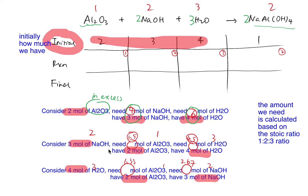Let's look at the next consideration. We need 1.5 moles of aluminium oxide and we do have two — that's enough. We need 4.5 moles of sodium hydroxide but we only have four. So we need 4.5 but can only provide four, meaning we lack water. Therefore sodium hydroxide is also in excess, since water is the limiting substance here.